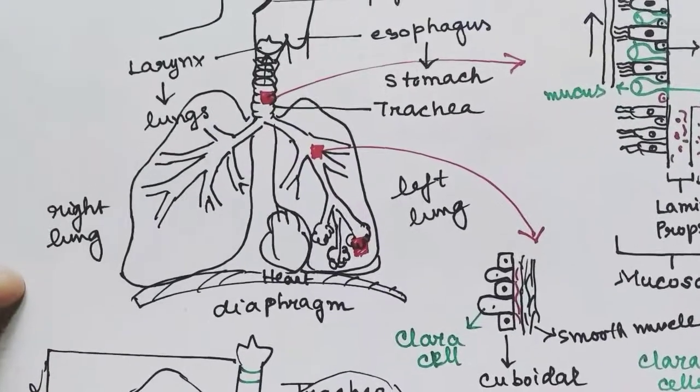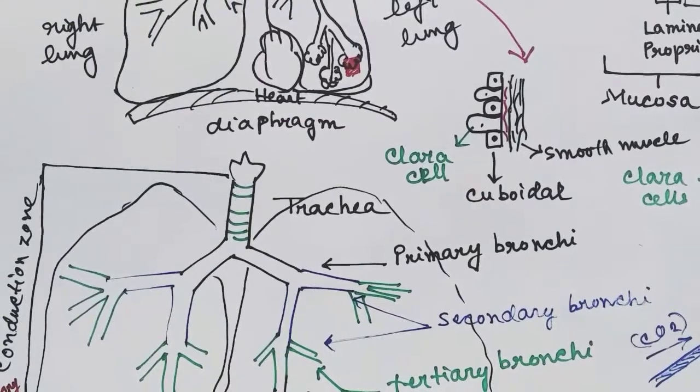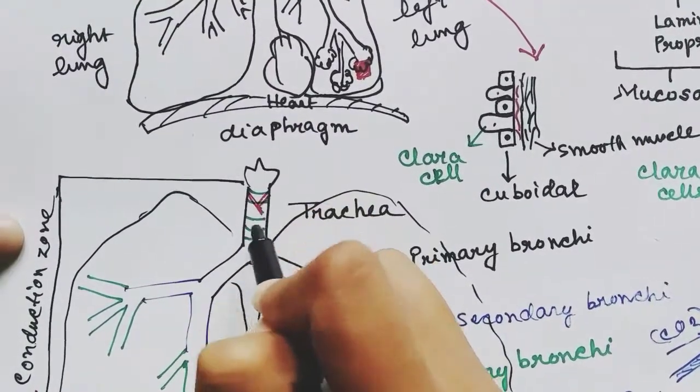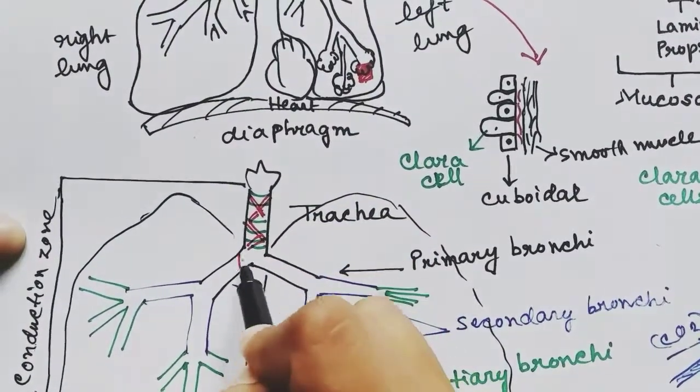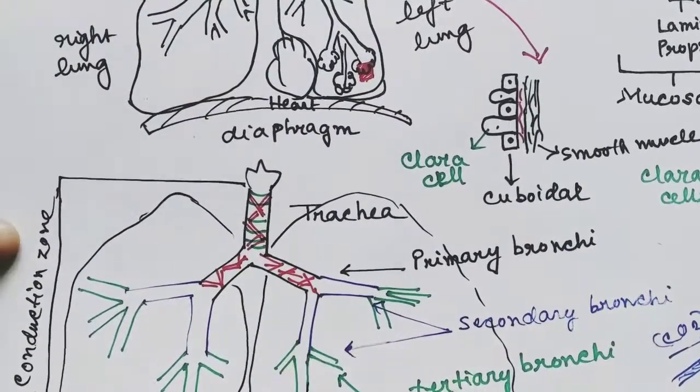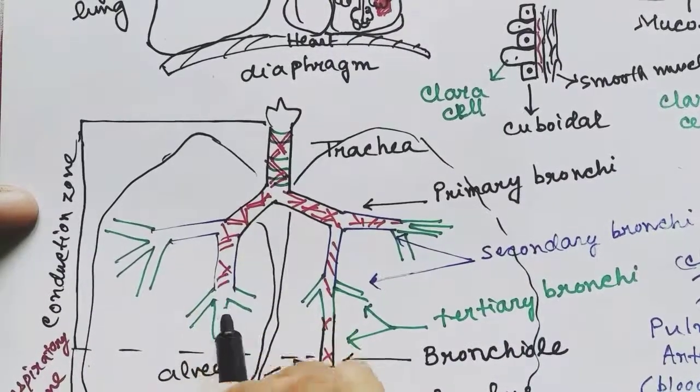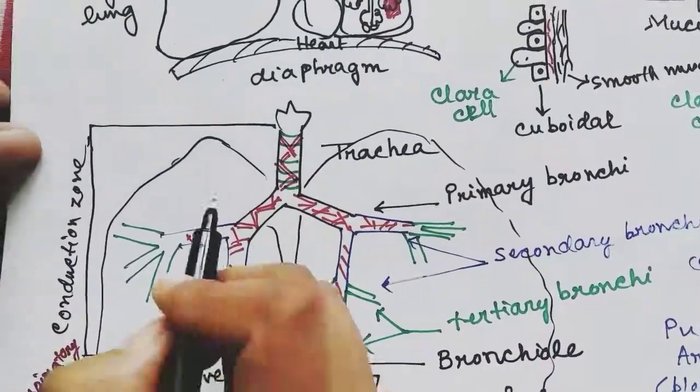Now the whole pathway—the trachea, the bronchi, and everything—is covered by smooth muscle layer. These smooth muscles help in contraction, that also helps in expiration and inspiration of air.